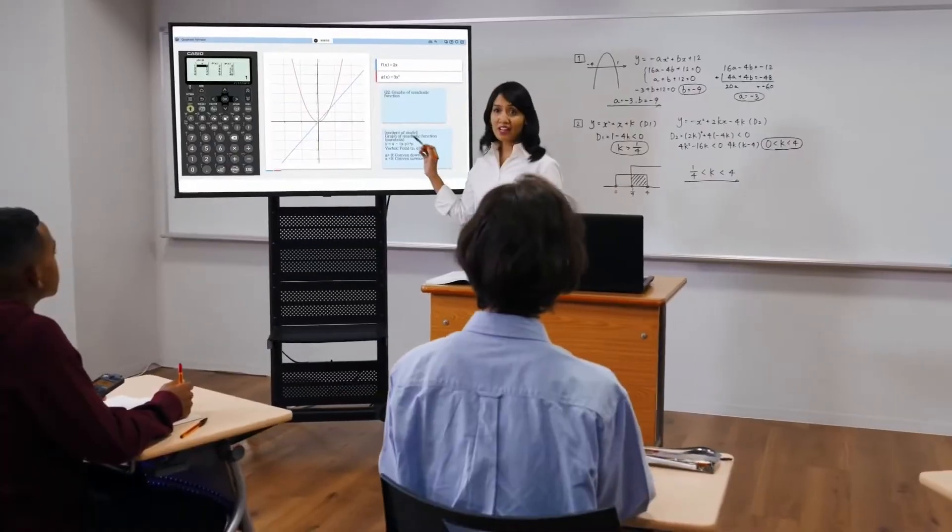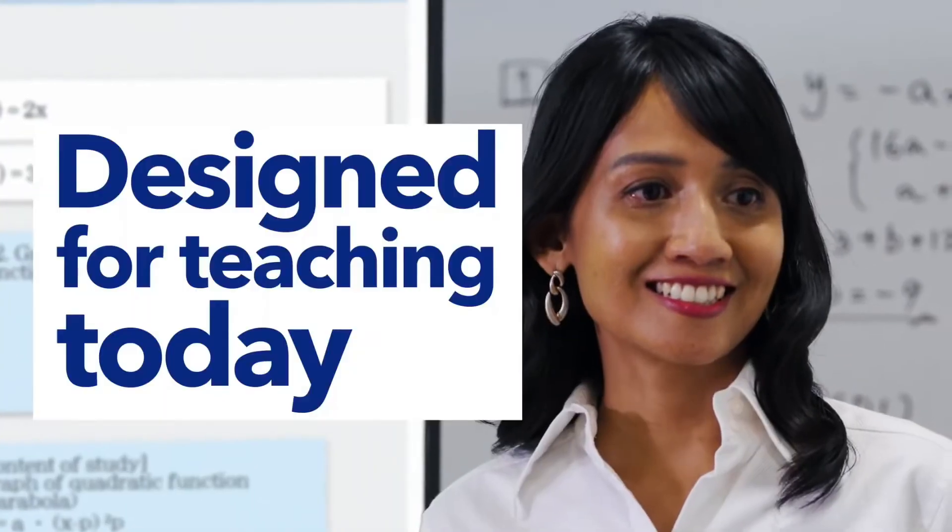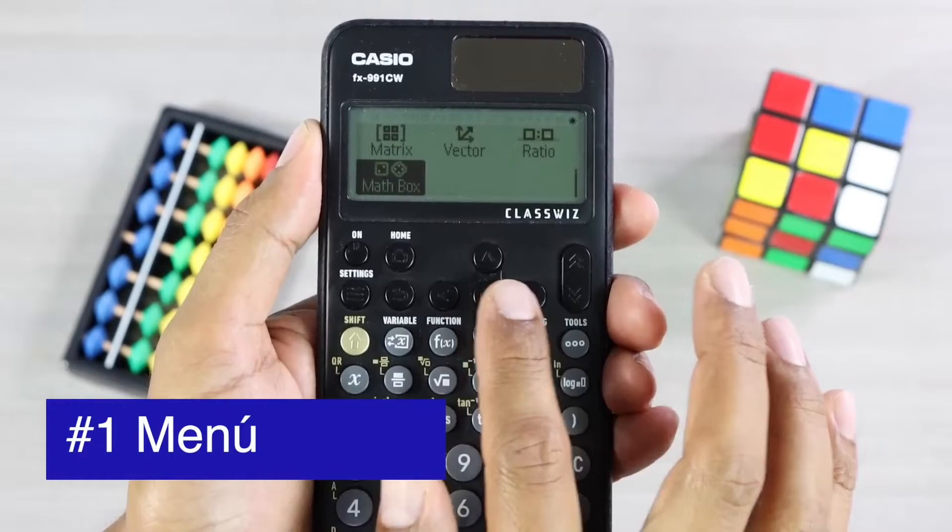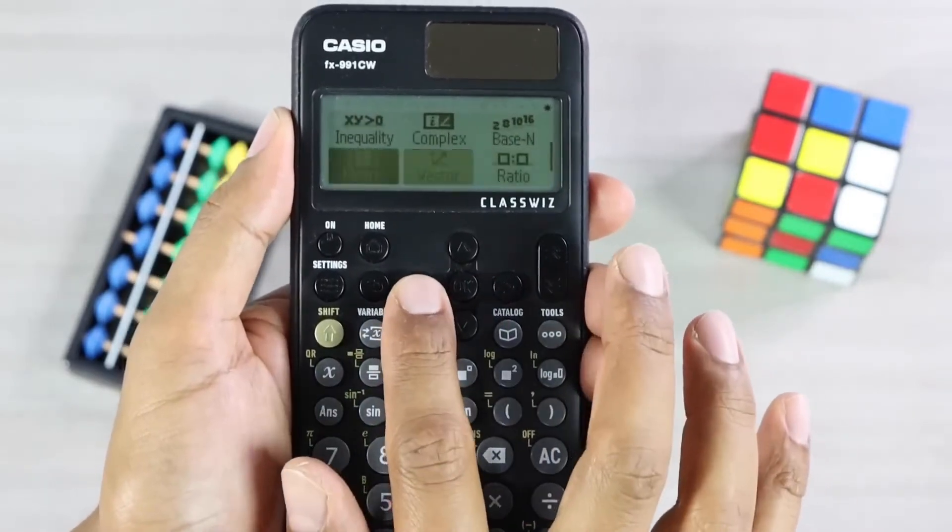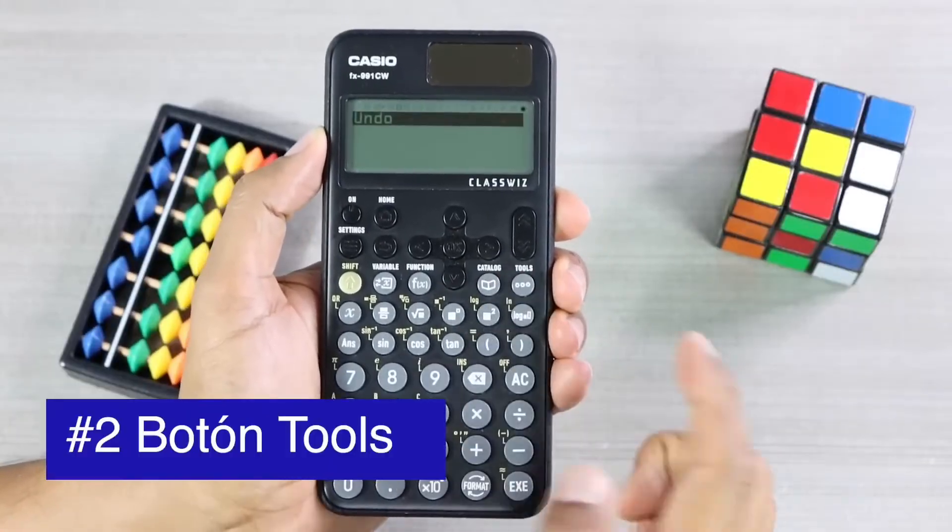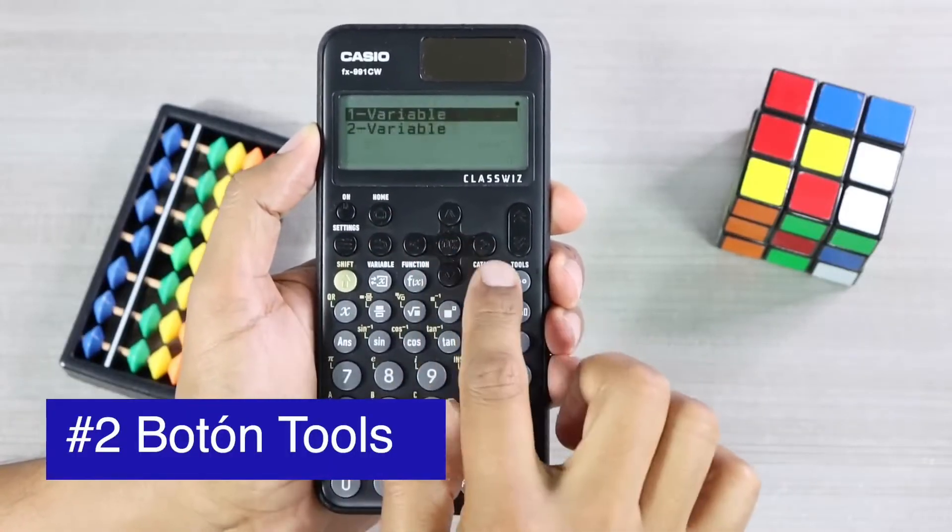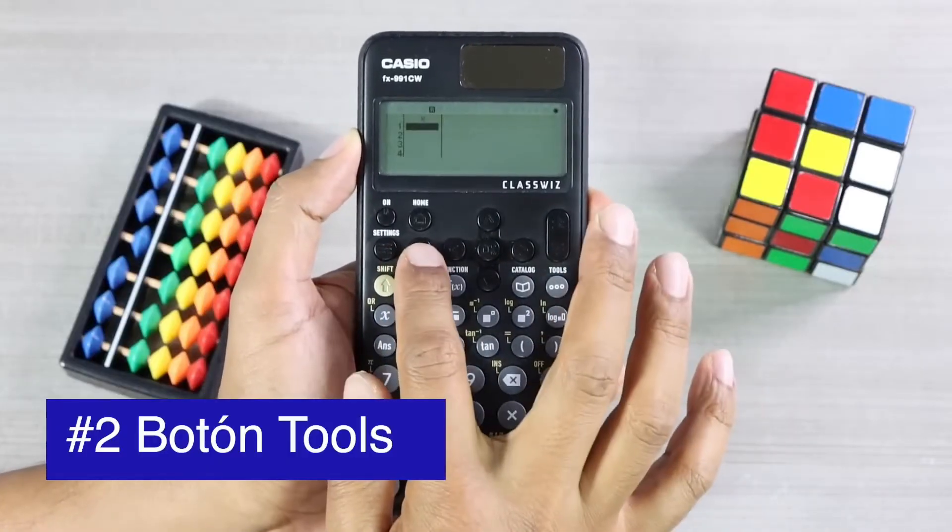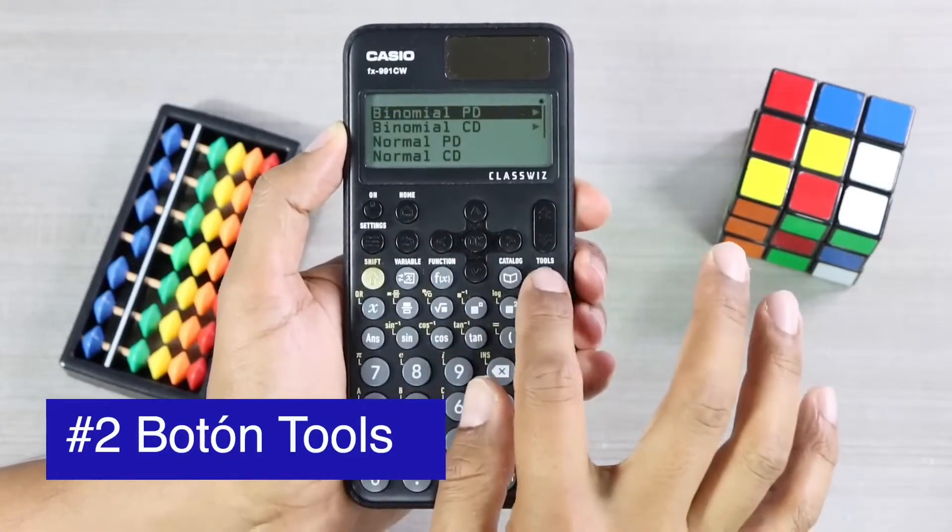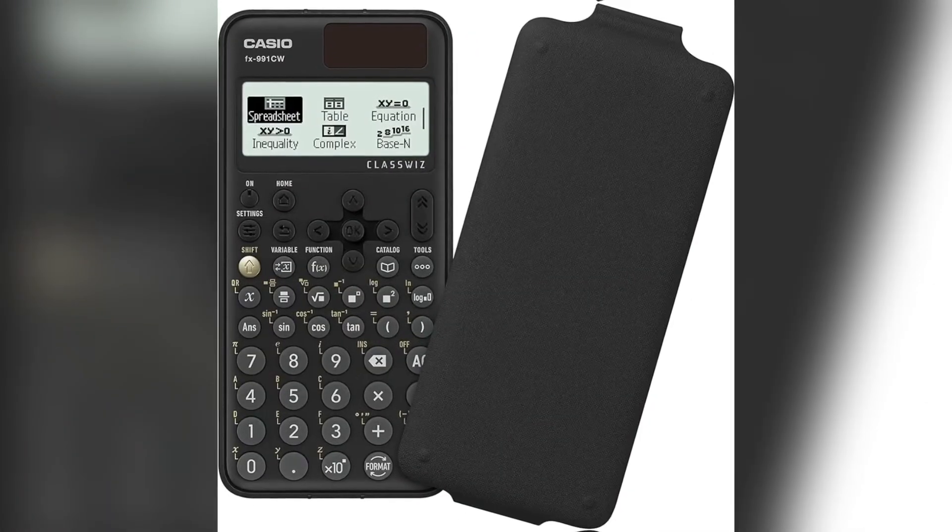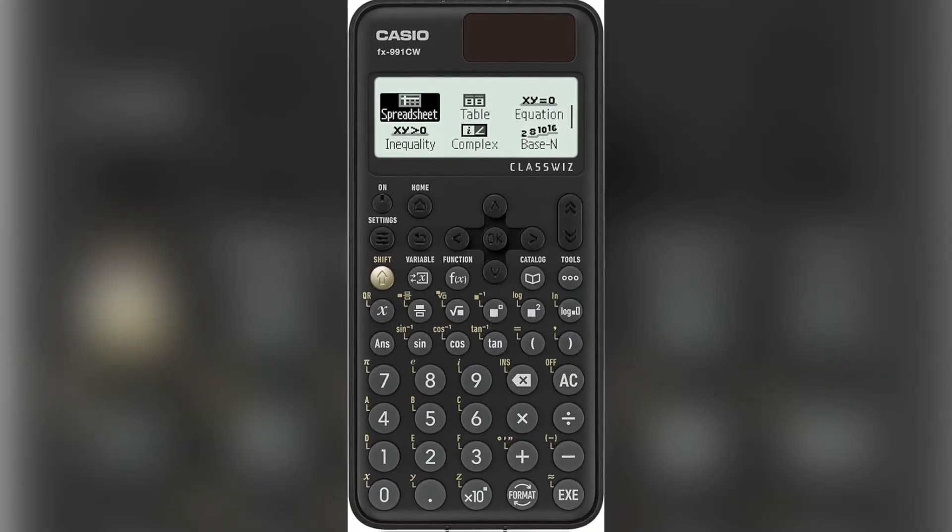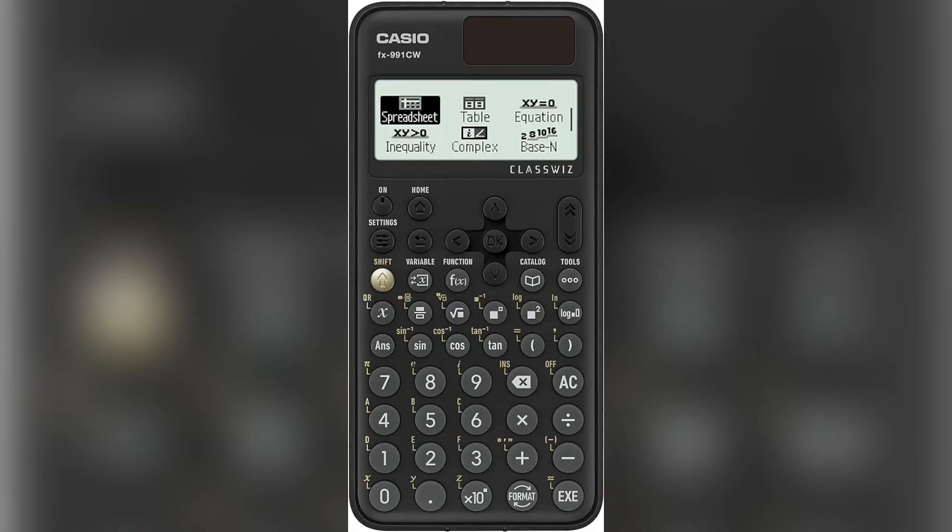One unique feature is its high-speed calculation capabilities, which means you spend less time waiting for results. This is especially useful in fields like structural or environmental engineering, where precision and speed can make a significant difference in day-to-day work. And with a solar power option, you won't have to worry about running out of battery during a long day of work. Even if you're tackling highly demanding calculations, this model can keep up without slowing you down, making it an excellent choice for those who need a reliable all-around performer.